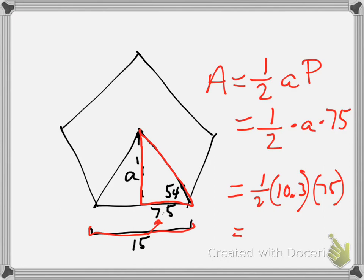You're going to get about 386.25 centimeters squared, and you can round that to 386.3 if you want to.